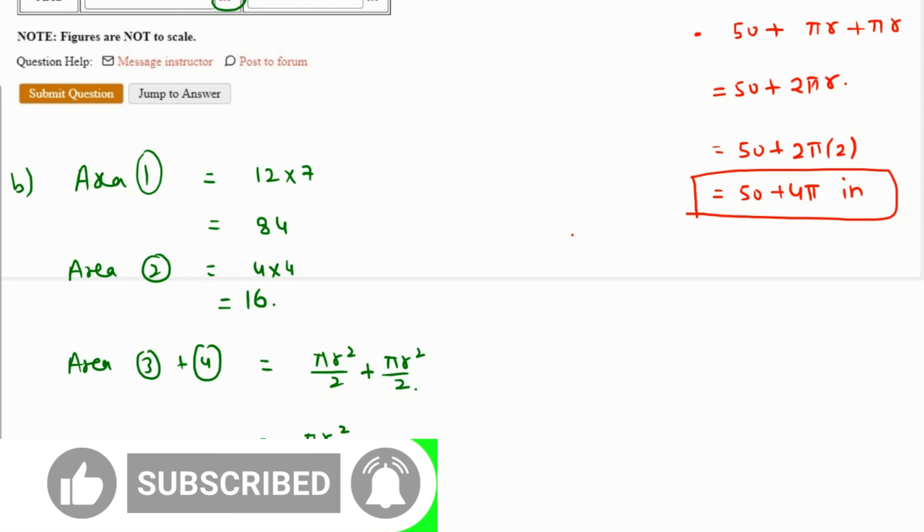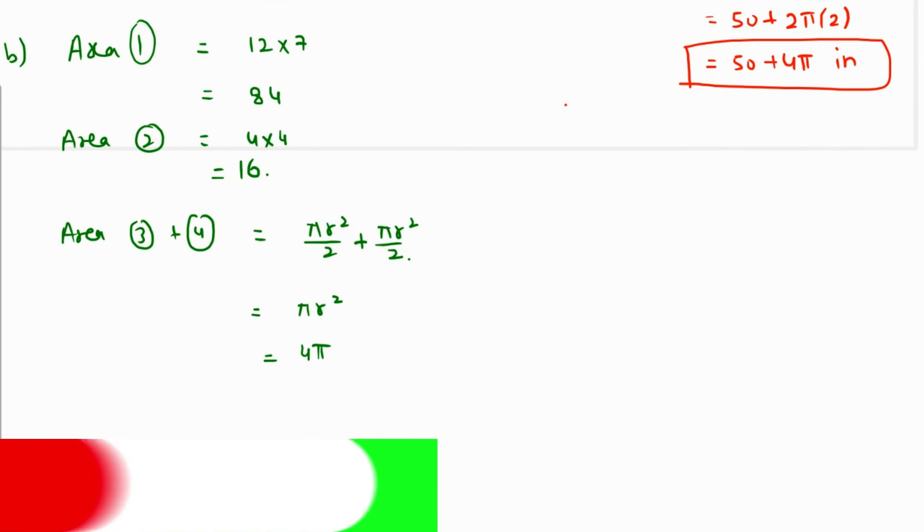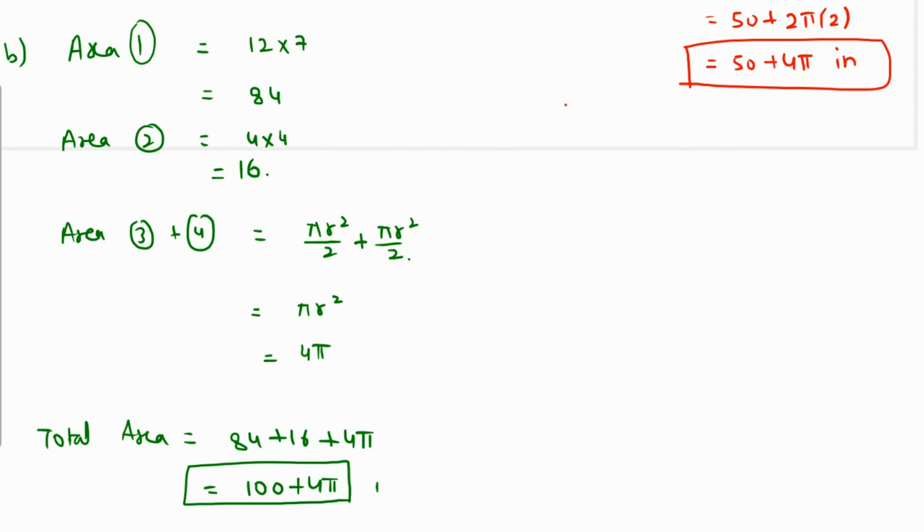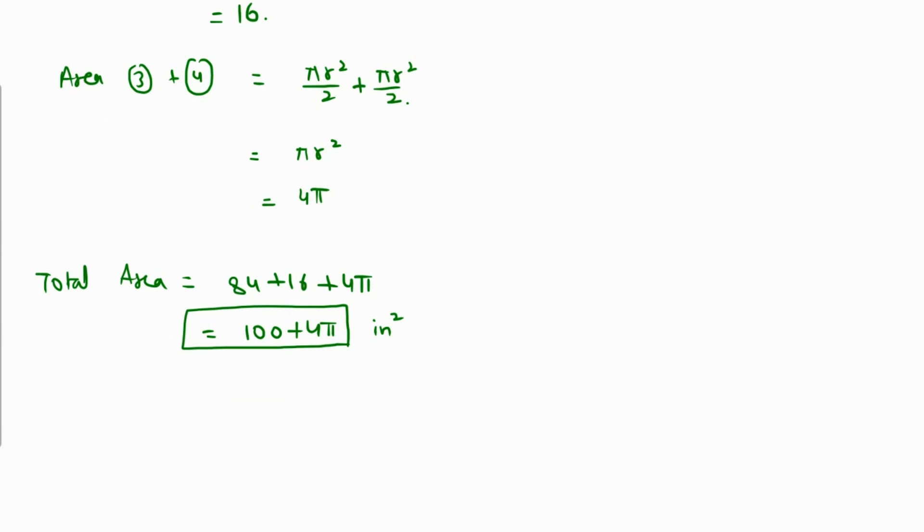So the total area is going to be the sum of area of all these three: 84 plus 16 plus 4π. 84 plus 16 is going to be 100, so the exact value is 100 plus 4π inches squared. And the approximate value, by replacing π with 3.14 and adding 100 to it, will give us 112.56 inches squared. So this is the approximate area. Thank you.